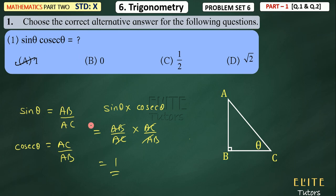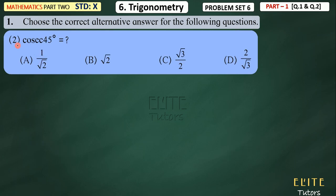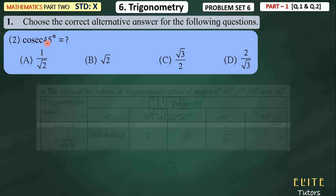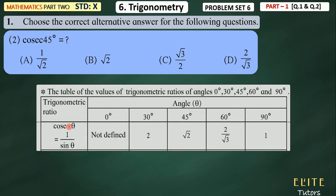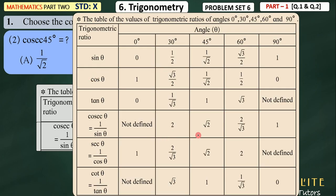And this is a little verification. After the first question, let's see the second question. The second question is: what is cosec 45 degrees? Cosec 45 degrees — from the table, the answer is root 2, which is here. For this type of question you have to recall the table.